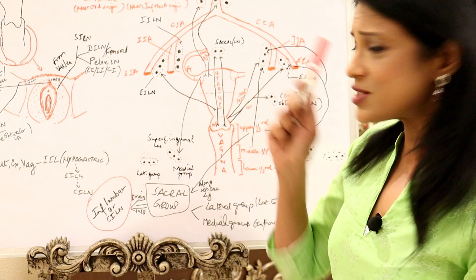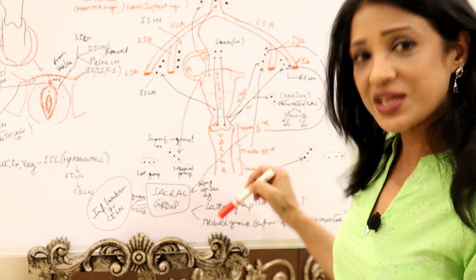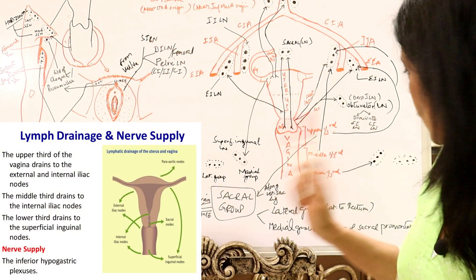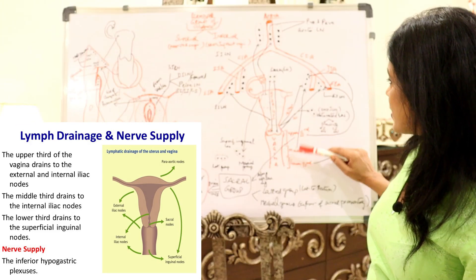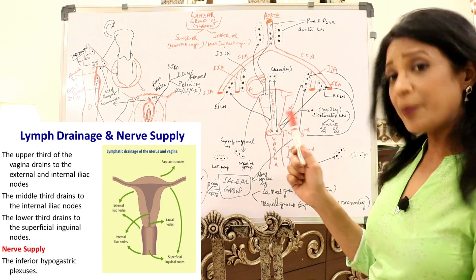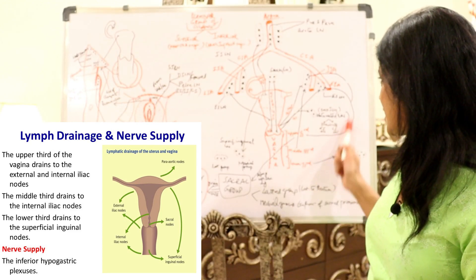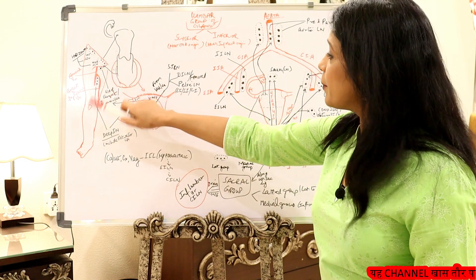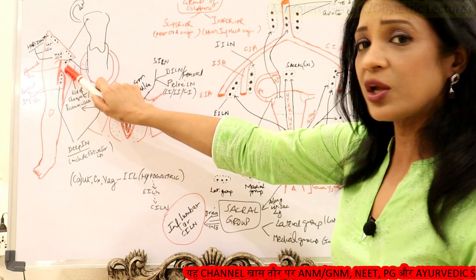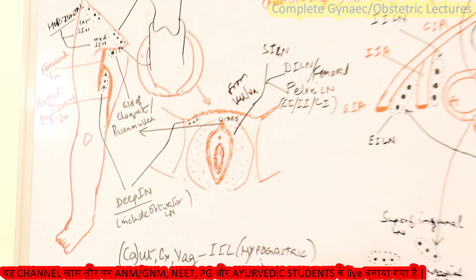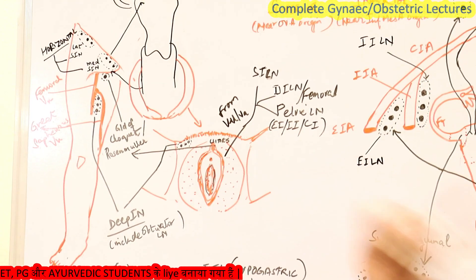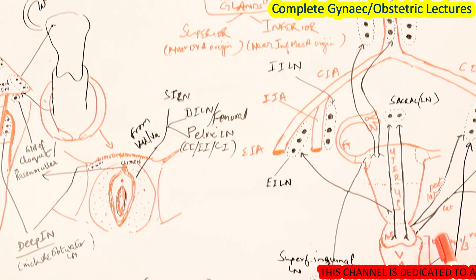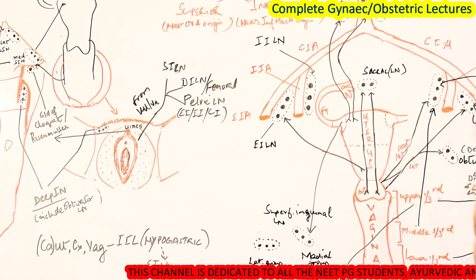It is not that complicated. There is a main lymph node chain draining the uterus, cervix, and vagina. Superficial inguinal drains three places: the cornual portion of the uterus, directly from the vulva, and the lower one-third of the vagina. The middle one-third of the vagina drains to the internal iliac. The upper one-third and the lateral part of the cervix drain to the external iliac. The gland of Cloquet or Rosenmuller's gland is just below the inguinal ligament and is the vertical group of superficial inguinal lymph nodes, directly draining the clitoris.